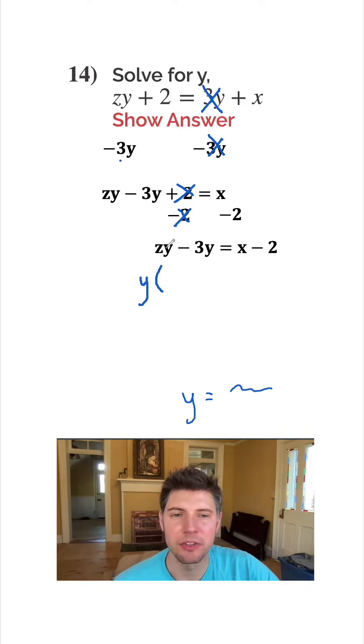So y times what gives us zy? That's z. And then y times what gives us negative 3y? That's negative 3. And this is still equal to x minus 2. And now we have what we wanted, a single y on this side.